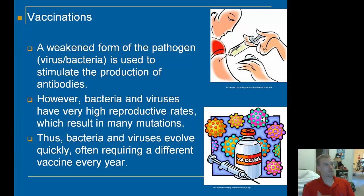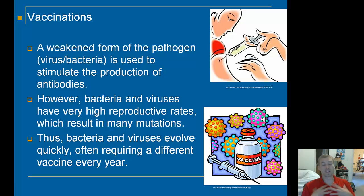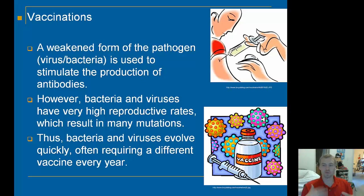Now let's think about ways we can combat viruses and bacteria. We can use something called a vaccine. We use a weakened form of the pathogen — a disease-causing agent, either the virus or the bacteria — to stimulate the production of antibodies in our body, so our body can recognize the actual virus when it shows up and take it down. One problem with vaccines is that bacteria and viruses have very high reproductive rates, meaning lots of mutations in the DNA, which changes the proteins on their outer coat. Since antibodies recognize those outer coat proteins, if the proteins have changed, the antibodies might not match up.